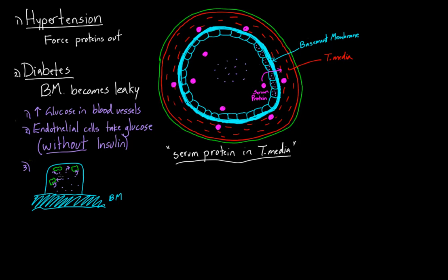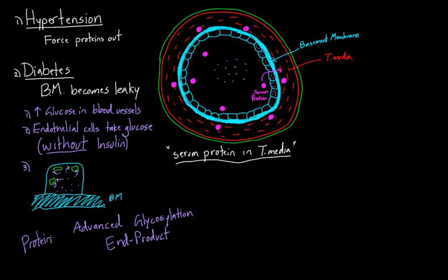So these proteins are considered glycosylated. Another longer term for it is that they turn into what they call advanced glycosylation end products. It's a normal protein or enzyme that was doing its job in the endothelial cells, but it becomes what we call an AGE — A-G-E, advanced glycosylation end product. These AGEs are basically the same protein but now with glucose on them.